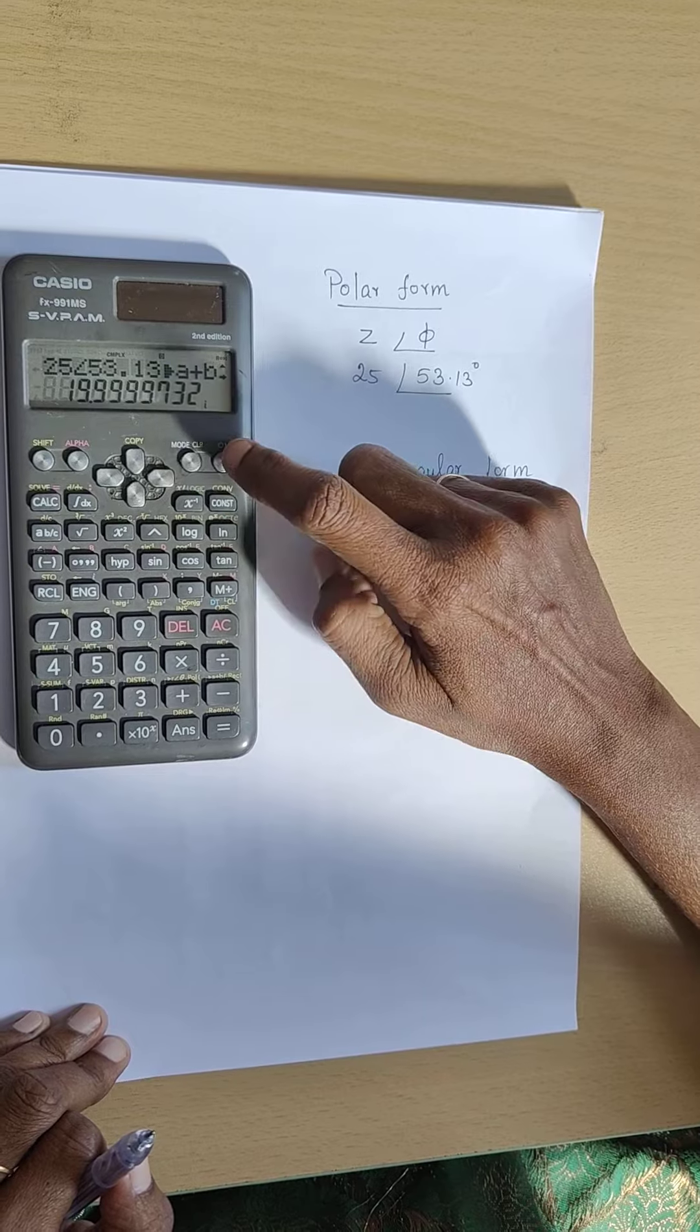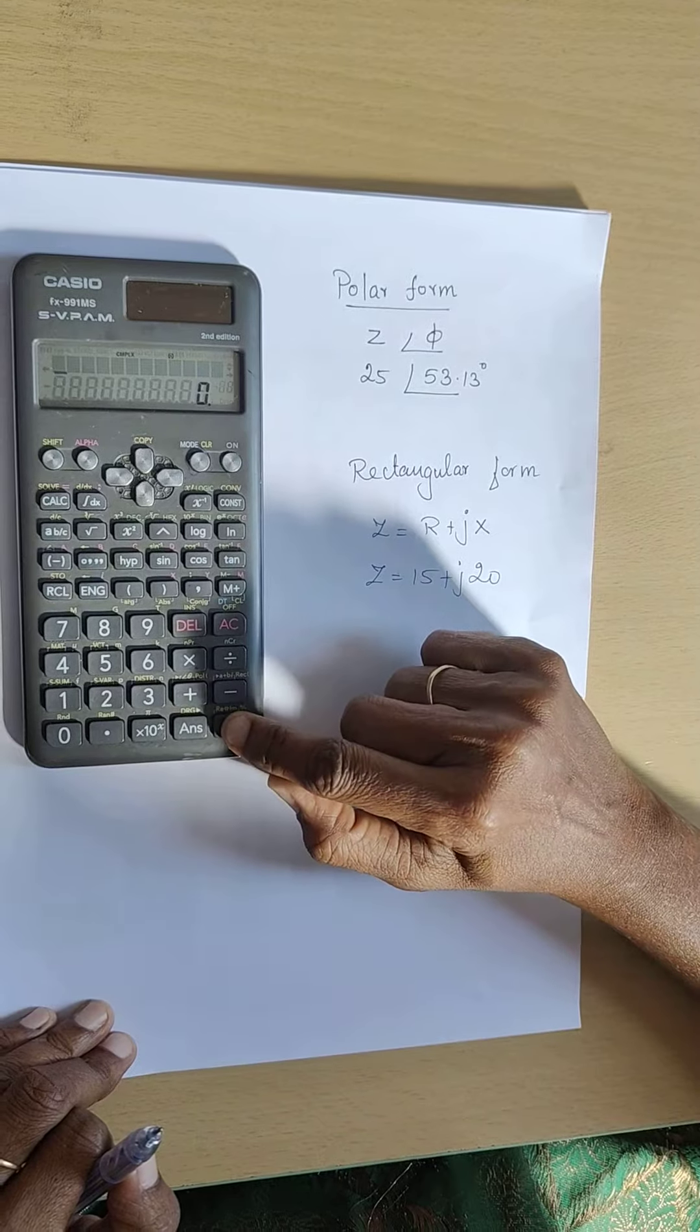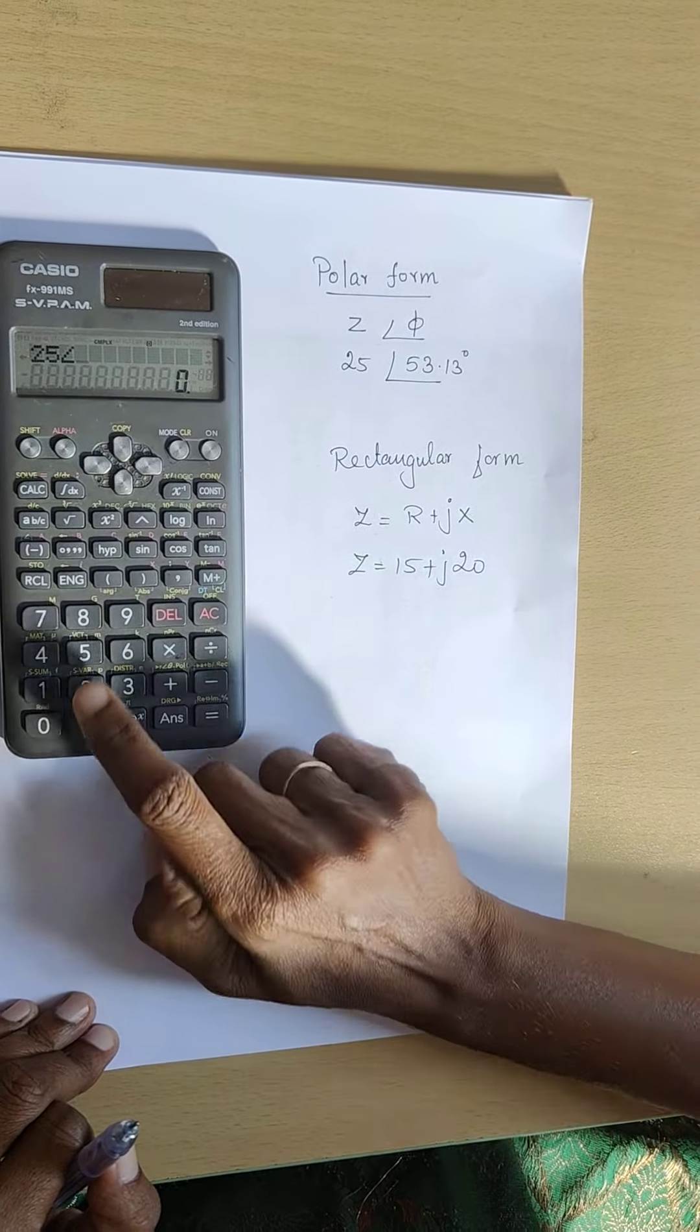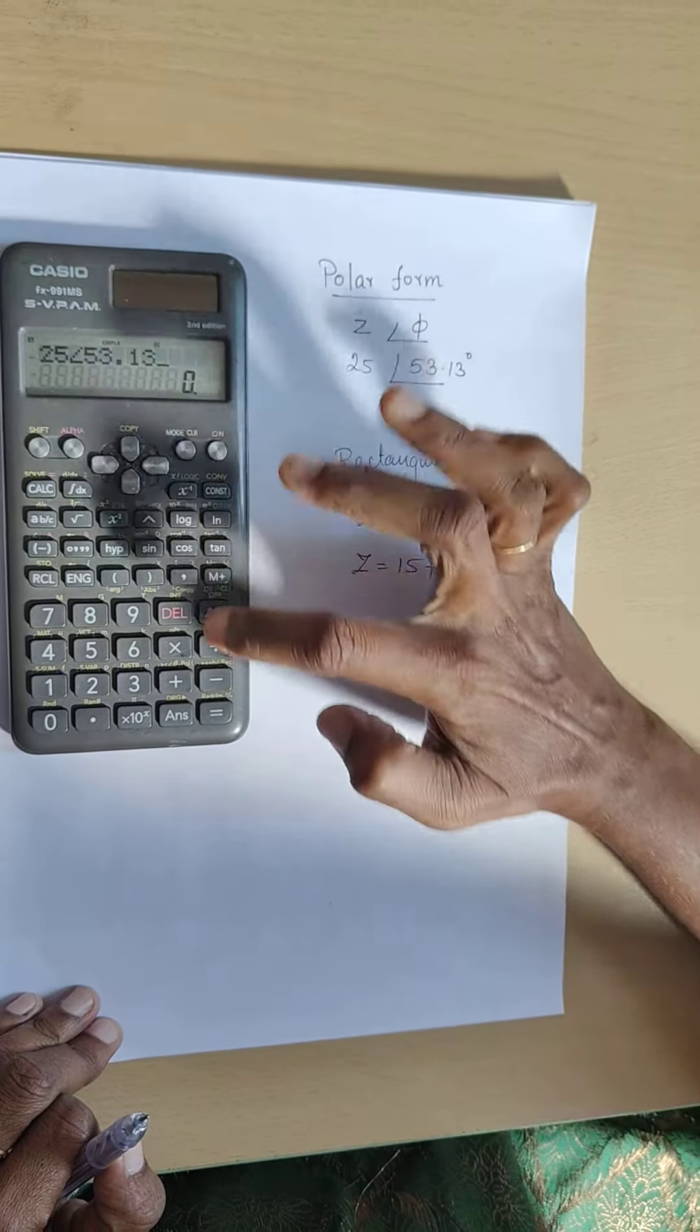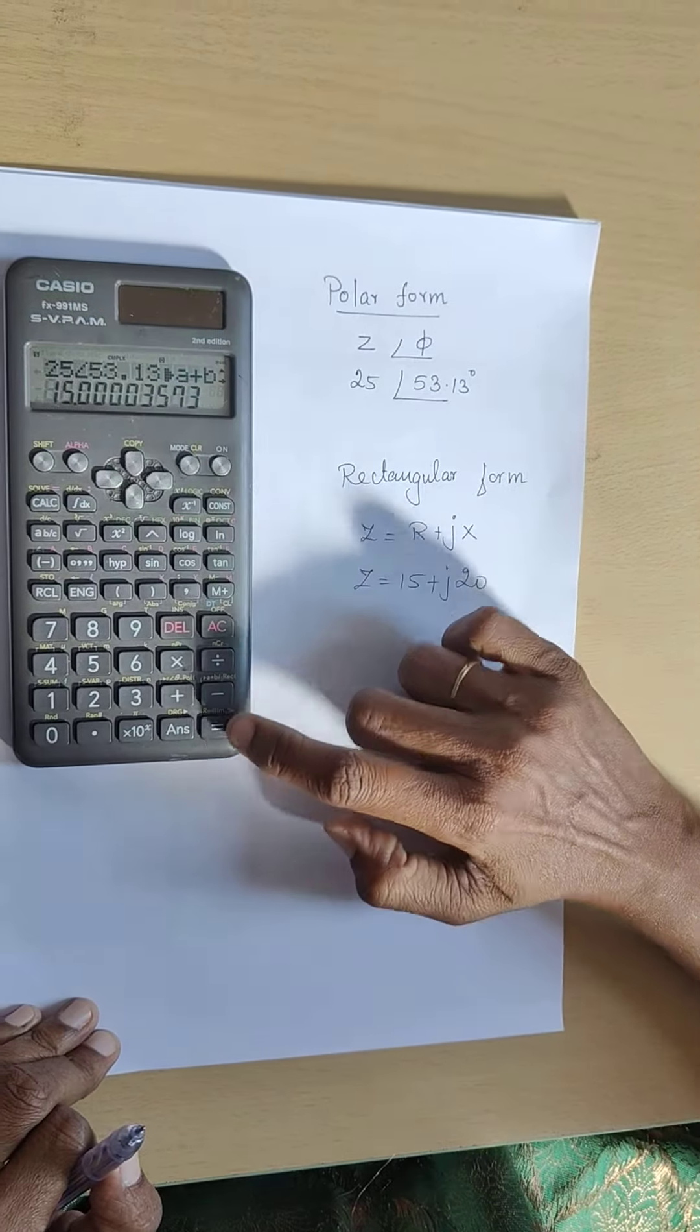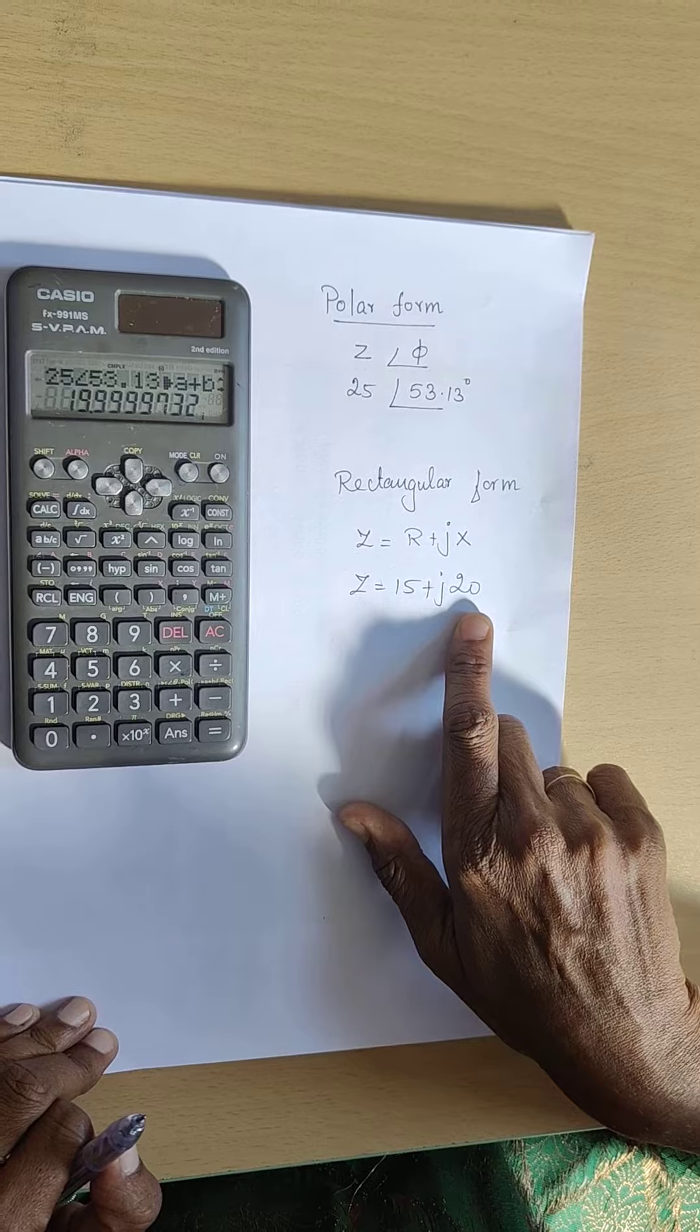Once again, I'll repeat the procedure. Go to mode, make it complex mode. Enter 25, shift, minus gives angle 53.13. Convert to rectangular form: shift, rectangle, minus, equals gives 15. Again, shift, equals gives the reactance value 19.9, which is approximated as 20.